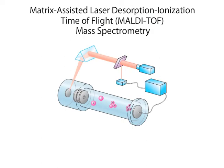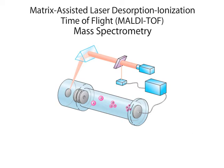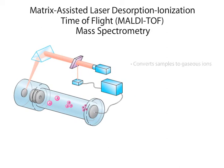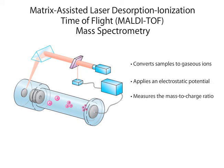Matrix Assisted Laser Desorption Ionization Time of Flight, or MALDI-TOF mass spectrometry, is a powerful tool for determining a protein's mass and identity. Mass spectrometers determine a protein's mass by converting sample molecules into gaseous ions. The application of an electrostatic potential enables this spectrometer to measure the ratio of the mass of each ion to its charge. This ratio is known as the mass-to-charge ratio, or m/z.